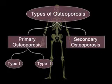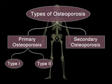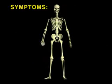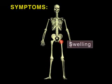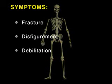There are two types of osteoporosis: primary and secondary osteoporosis. Primary osteoporosis is in turn divided into type 1 and type 2. Symptoms of osteoporosis are swelling and joint pain.